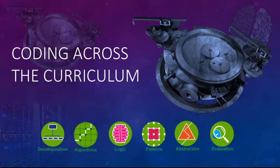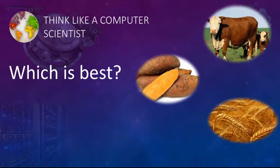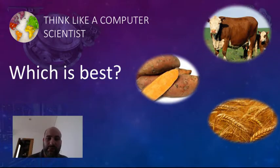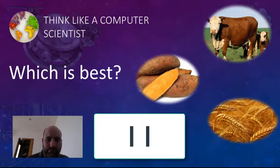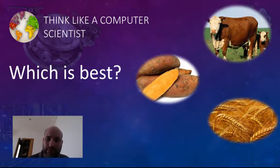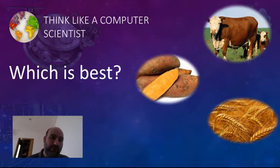Coding across the curriculum. Look at these. Which do you think is best? When you've had a think about it, unpause the video. That's right, the yam is best. Beef uses lots and lots of resources for very little input, and wheat uses a lot less than dear old sweet potatoes. That is one way that you can save the world by planting the right crops in the right places.